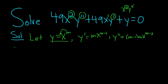So this will be 49x squared. Then y double prime is this piece over here. So m minus 1, m times x to the m minus 2.